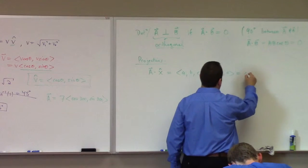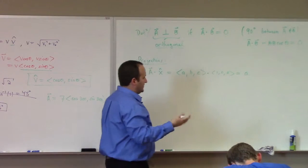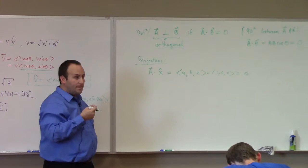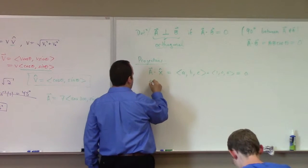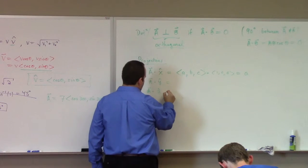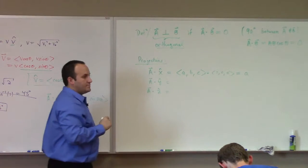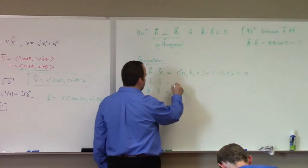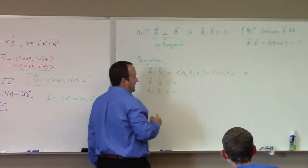Yeah, you get a, don't you? A plus zero plus zero, right? What's a dot y hat? What's a dot z hat? B and c, right? All right, if you work it out.